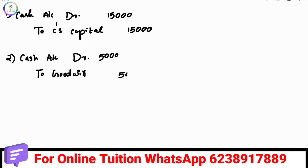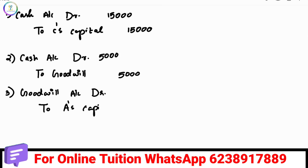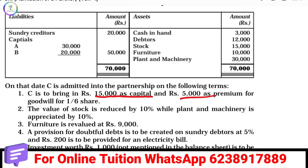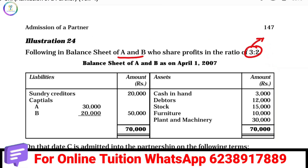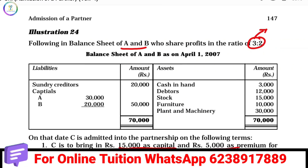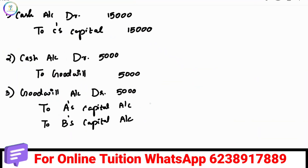How do we get the journal entry for goodwill? The goodwill account is debited to partners A's Capital Account and B's Capital Account. Now, goodwill is distributed. The ratio is 3 to 2. Because we have a 3 to 2 ratio, that is the old ratio, which is the sacrificing ratio. Sacrificing ratio is 3 to 2.